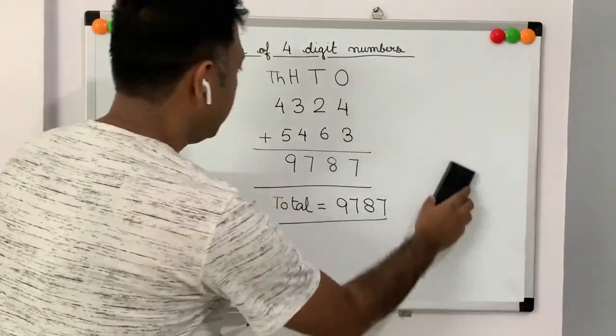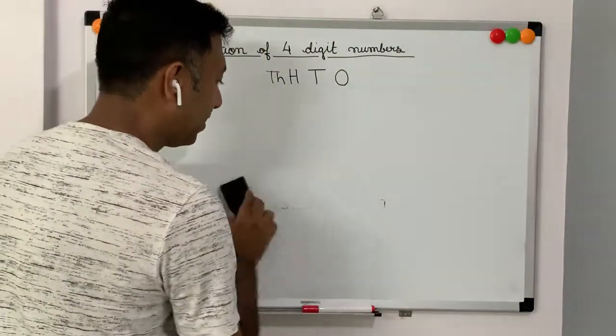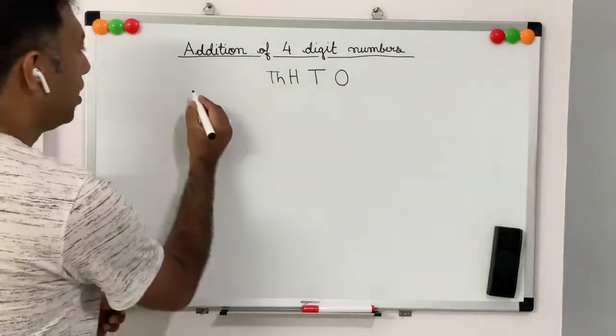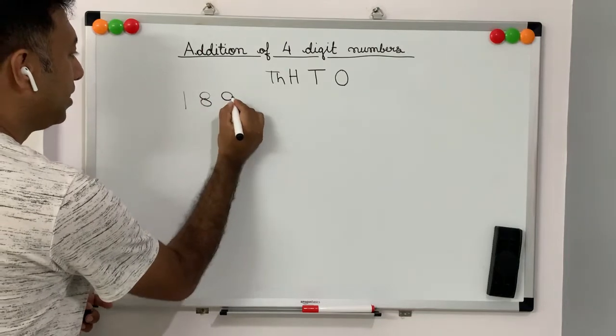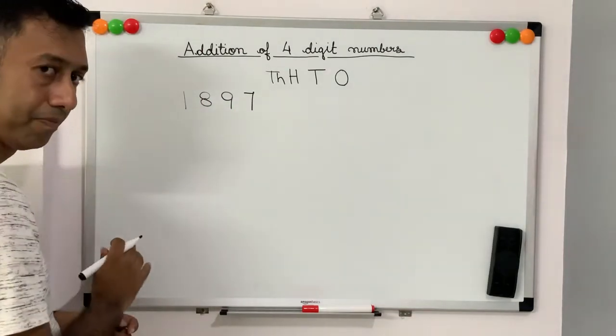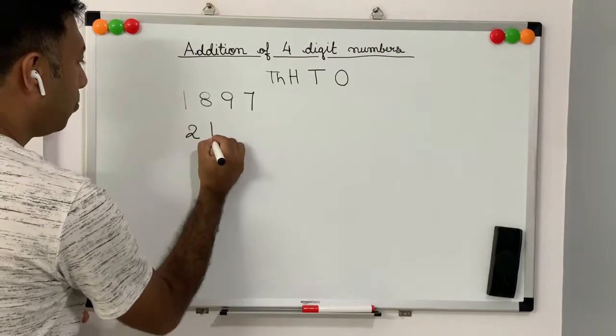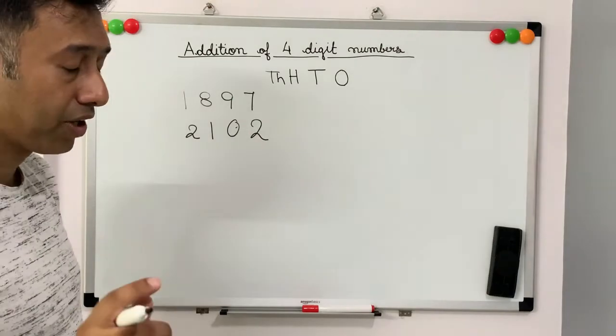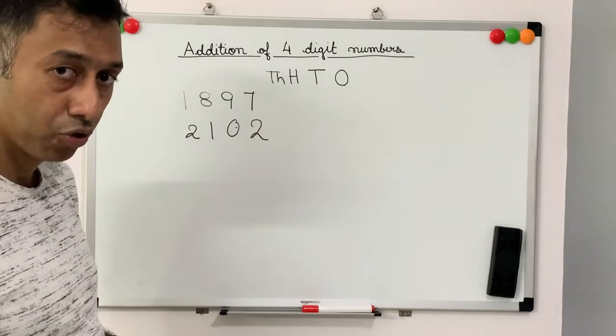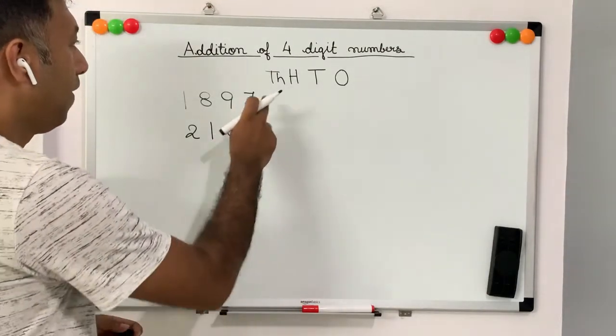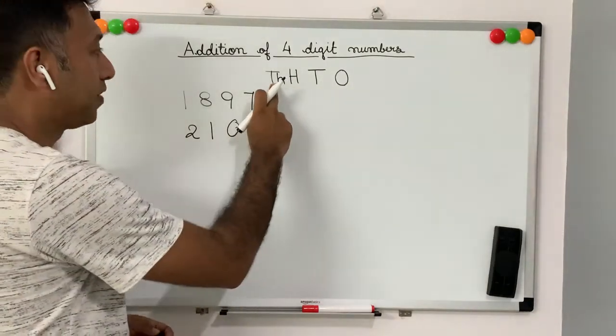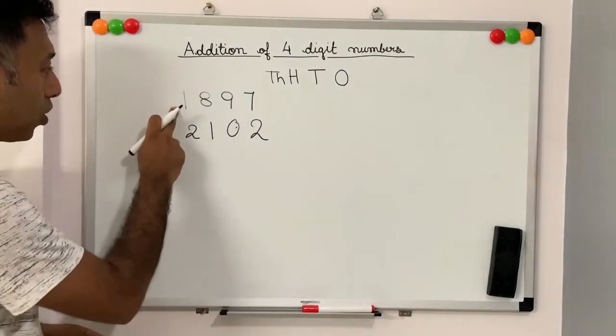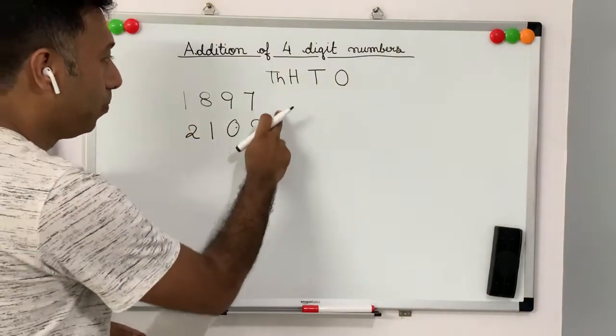Now, take out your copies and let's do another sum. Let's try to add these two numbers: 1, 8, 9, 7 and 2, 1, 0, 2. First write down the question in your notebooks. Make this box the houses of thousands, hundreds, tens and ones, and then we will copy these numbers into our houses.